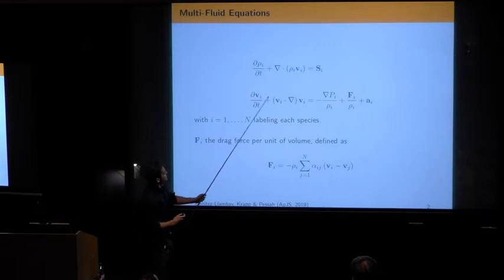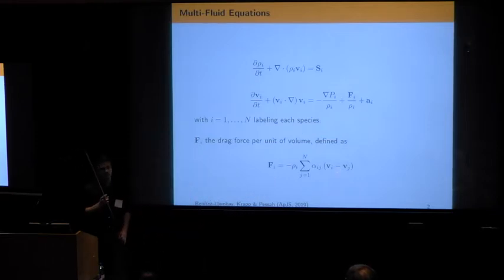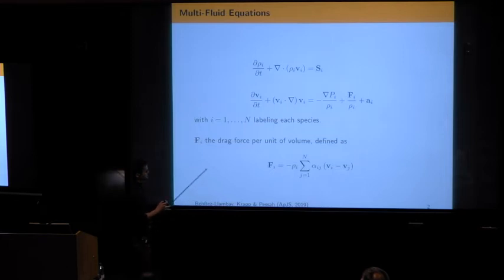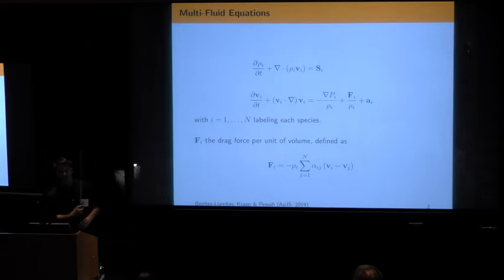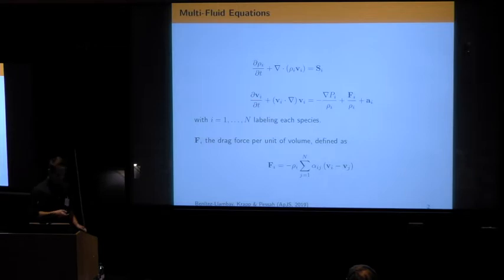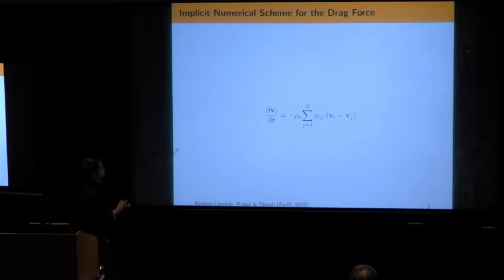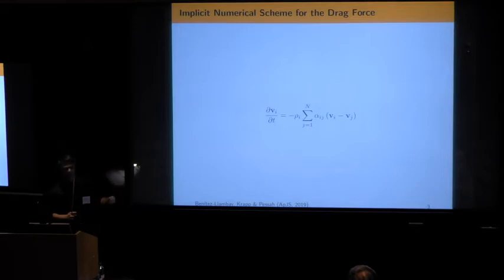In the continuity equation, we can have mass transfer between different species. In the momentum equation, I want to focus your attention on the transfer of momentum — the momentum transfer between different species. What we are assuming is that the drag force is given by an expression that depends on the velocity difference and has some collision rate alpha, which in principle is a function of the density and velocities of the different species.